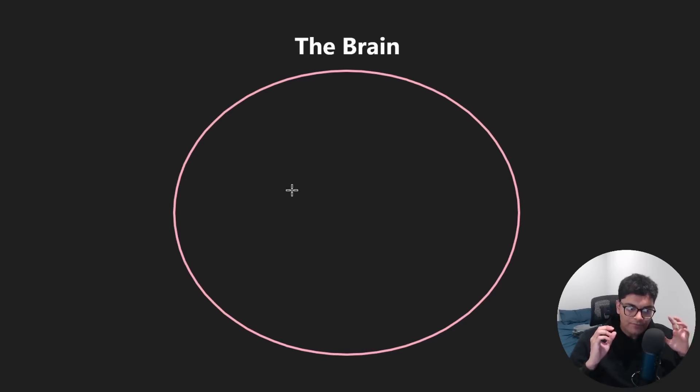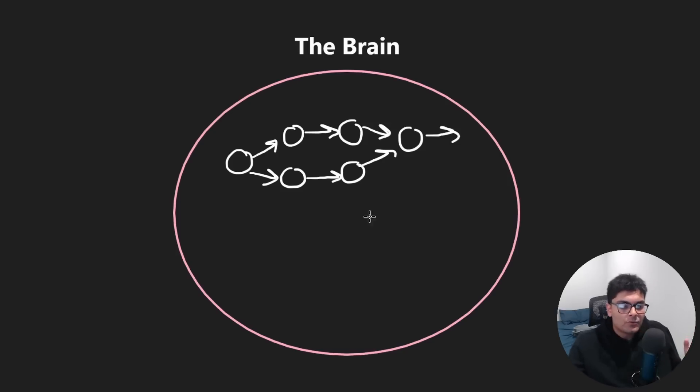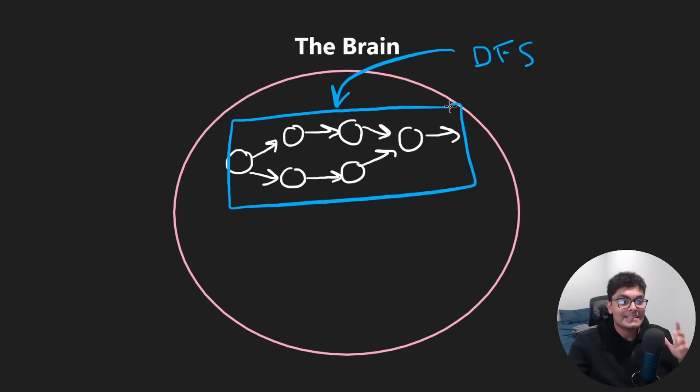When you're learning something for the first time, you're actually literally creating a little circuit in your brain with little neurons, and that circuit tells your brain what to do. So the reason I can write DFS very quickly is because I have a circuit for DFS literally physically in my brain. The problem is that building this circuit is slow. It takes time.